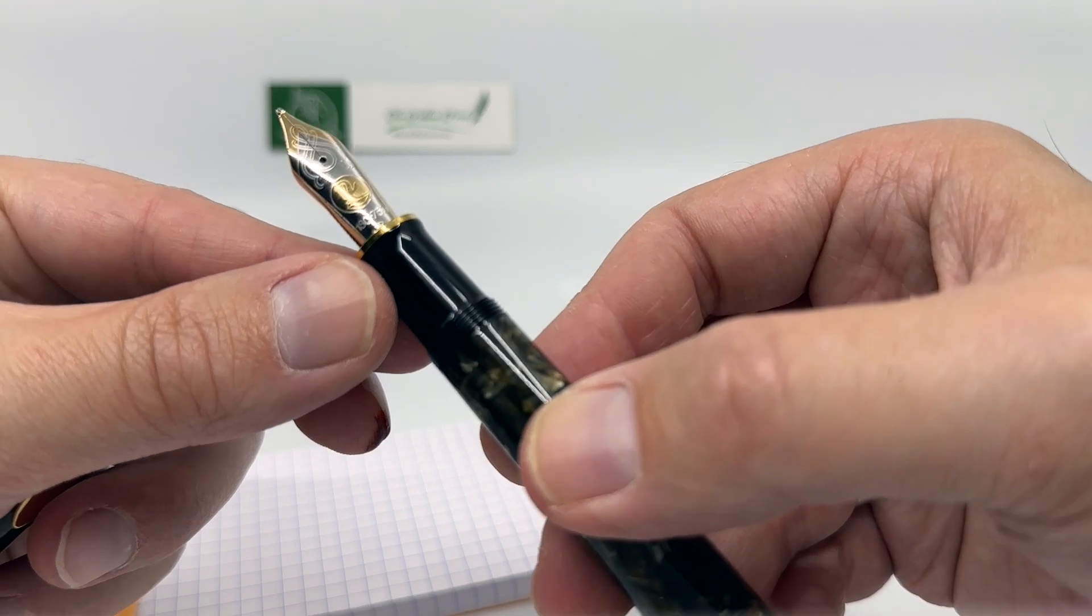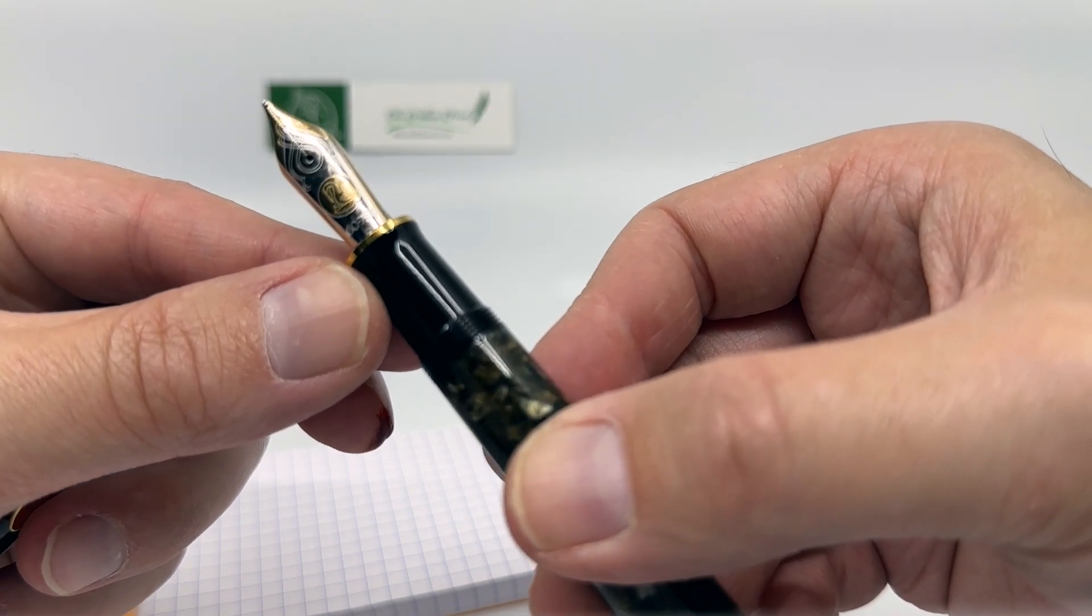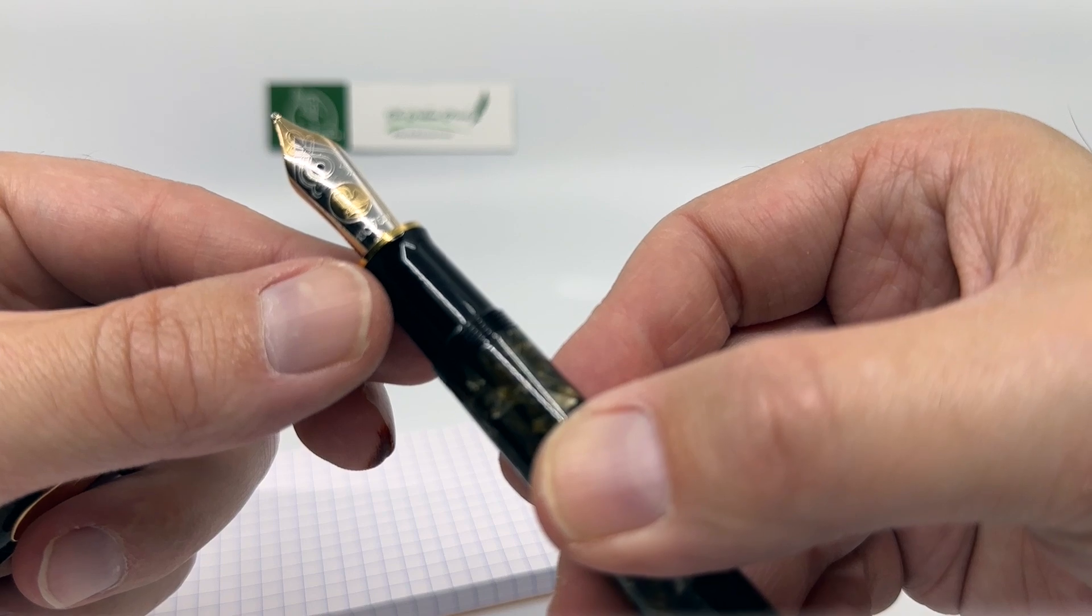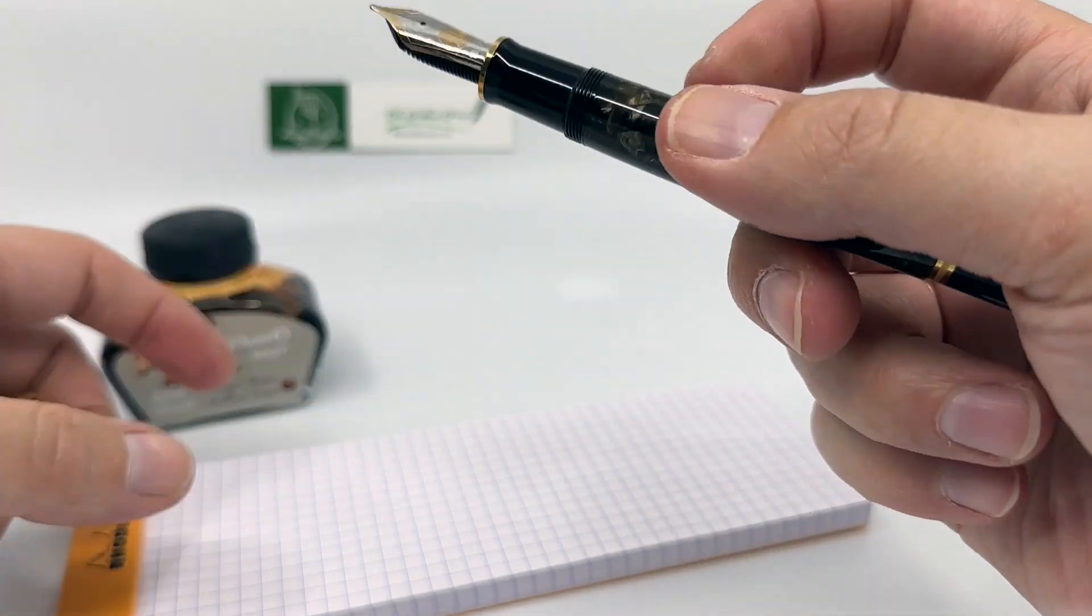The nib is Pelican's standard two-tone rhodium plated 18 karat gold. You can tell it's an M1000 nib immediately because it has this unique dual scroll work.